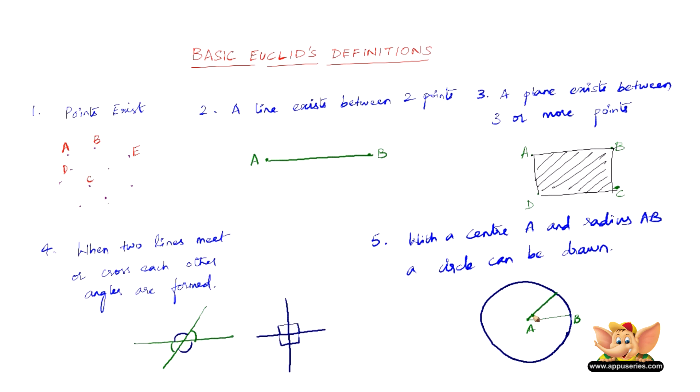And all the radii, which is the plural form of radius, are equal in a circle. So these are the basic Euclid's definitions.